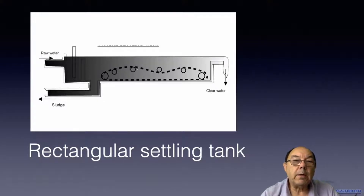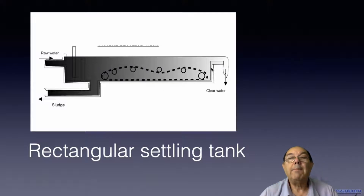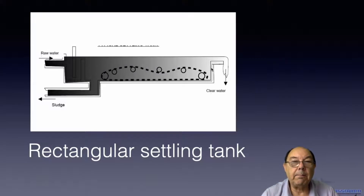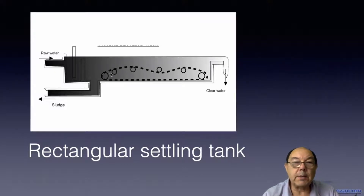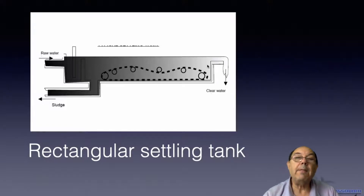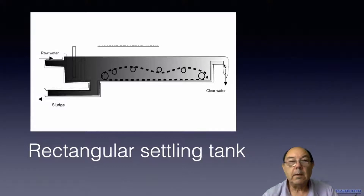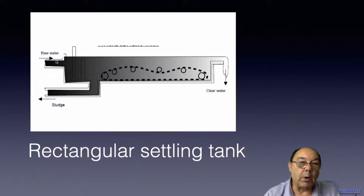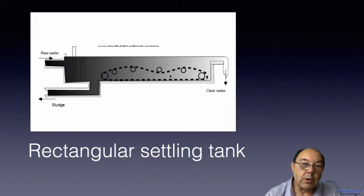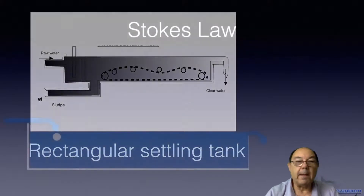When you are designing these tanks and calculating the length, what you need to know is what's the smallest particle that you need to settle. Then you need to calculate the flow rate so you know how long it needs to travel until it gets below the weir, and then you can calculate this particular length. The raw water comes in here, it settles, and this mechanism drags the sludge down and then that's treated.